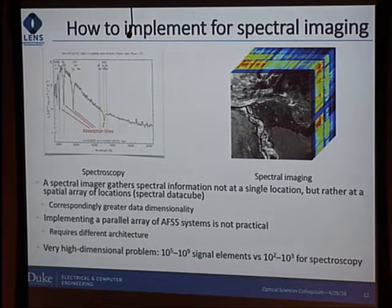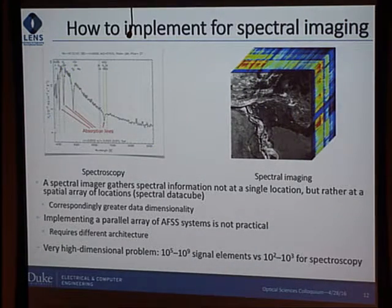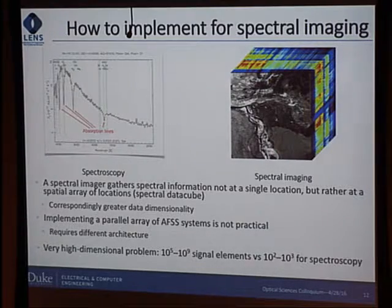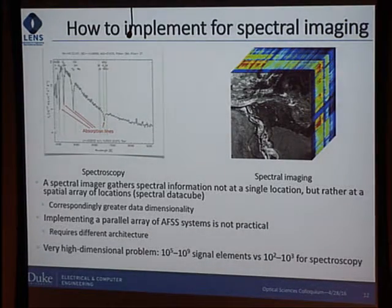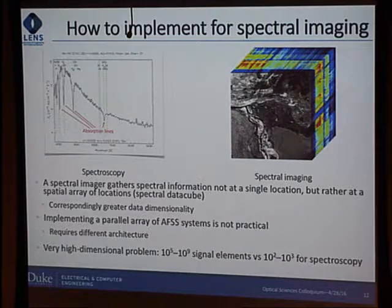The next step was spectral imaging. A spectral imager captures spectral information not at a single location but at every point in a scene — yielding a three-dimensional spectral data cube of much greater dimensionality. We could imagine solving this with a parallel array of single-pixel spectrometers, but that would require one DMD per location — making DMD manufacturers happy but us and our customers very sad. We need a different architecture. Real-world spectral imaging data cubes can contain hundreds of thousands to billions of elements — a very high-dimensional problem.